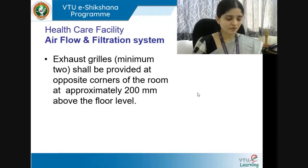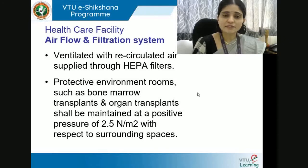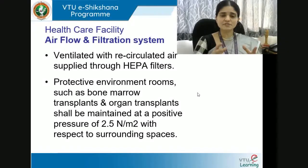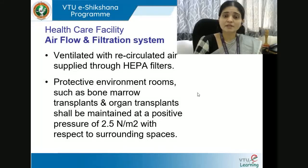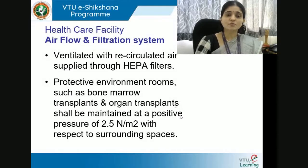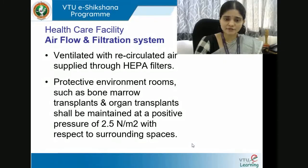For operating rooms and procedure rooms where patients are highly susceptible to infection — such as orthopedic and cardiac operating theatres — a laminar airflow system is advisable. HEPA filters on the ceiling give out cooled clean air in a downward draft, with return air grills and an influx of fresh air. Unidirectional airflow at a velocity of 0.45 ± 0.1 meters per second is advisable. The area of the laminar flow grid shall extend a minimum of 450 mm beyond the footprint of the operating table on all sides. Additional supply diffusers may be provided. Exhaust grills — minimum two — shall be provided at opposite corners of the room at approximately 200 mm above the floor level.